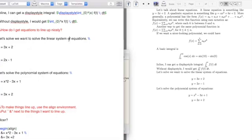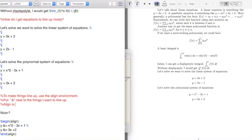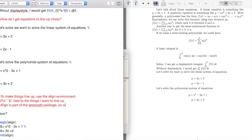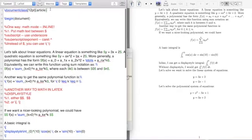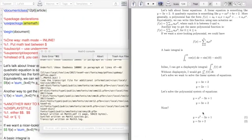And the reason for that is that align is part of the amsmath package. So we need to use that package. So at the very beginning of the document, after document class 12.1 article, I'm going to have my package declarations where I tell the document what packages to use. Amsmath, that should fix the error, and it does.